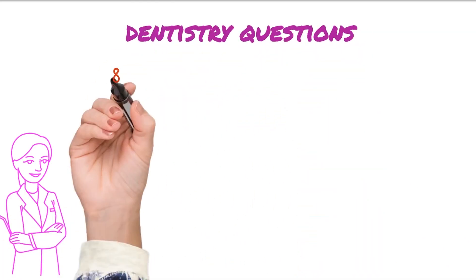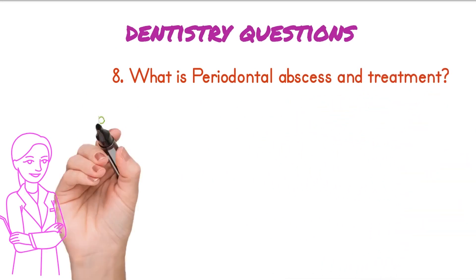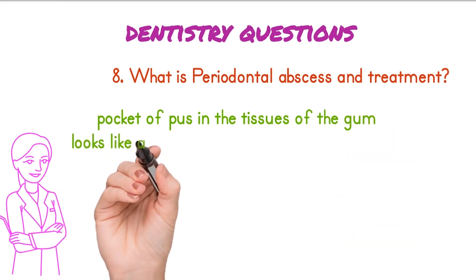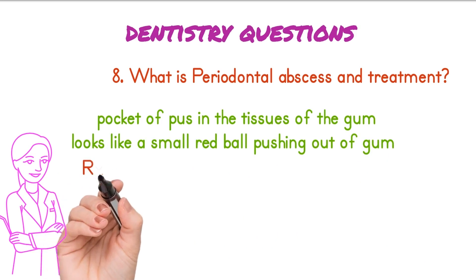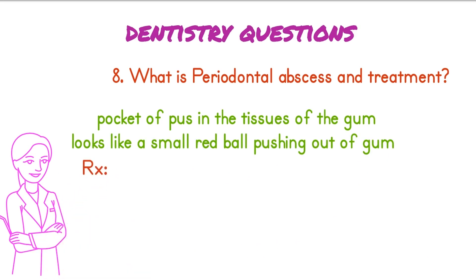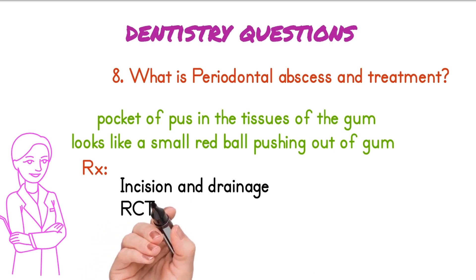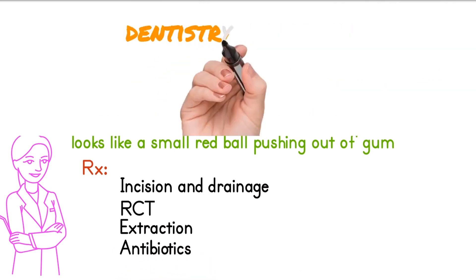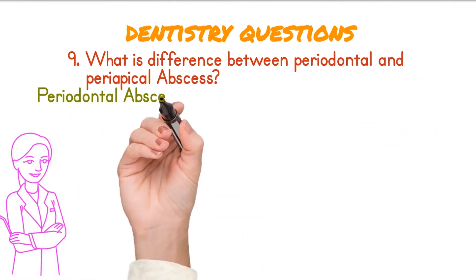What is a periodontal abscess and its treatment? A periodontal abscess is a pocket of pus in the tissues of the gum. It looks like a small red ball pushing out of the swollen gum. Treatment includes incision and drainage of pus, root canal treatment, or extraction of the tooth if unsalvageable, along with appropriate antibiotics.